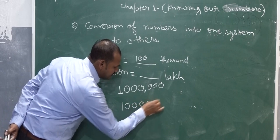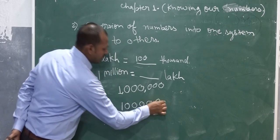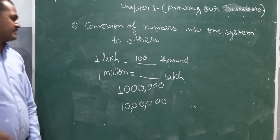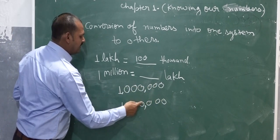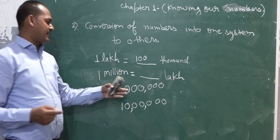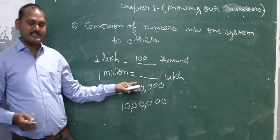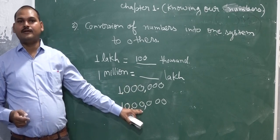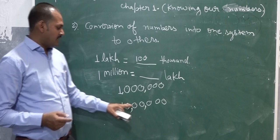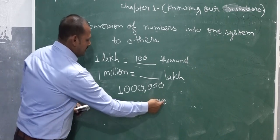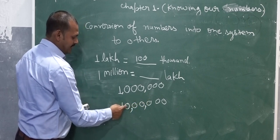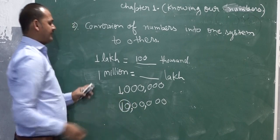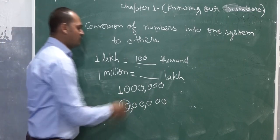First we write the same numbers, then we put the comma according to the Indian system. There are 6 zeros in the number in the international system and 6 zeros in the Indian system. So counting: 1, 10, 100, 1000, 10,000 — that is 10 lakh. So 10 lakh is equal to 1 million.